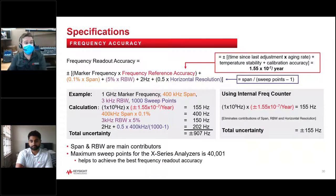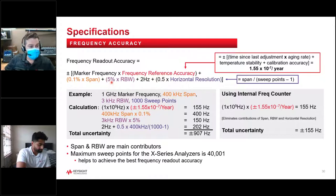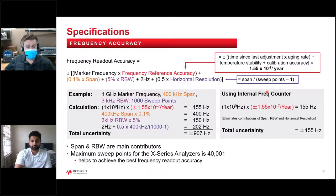On frequency accuracy: in our Keysight data sheets, we rigorously specify how the frequency readout is determined, with uncertainty quantified for each element of measurement. The key takeaway is that your span and resolution bandwidth are the main factors. If you're trying to increase frequency readout accuracy, a lower span and lower resolution bandwidth will provide less uncertainty. Also, many modern spectrum analyzers — certainly the Keysight ones — include an internal frequency counter, which in our case can be accessed through the marker menu as a frequency counter, reducing your uncertainty by a factor of four.